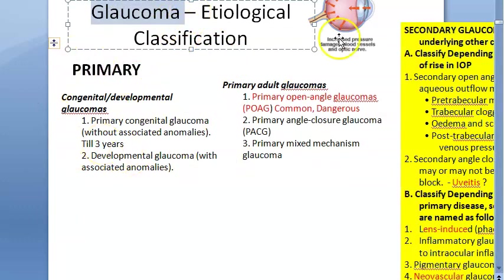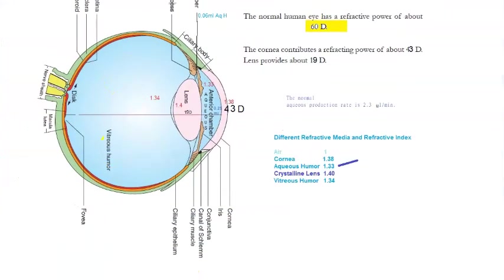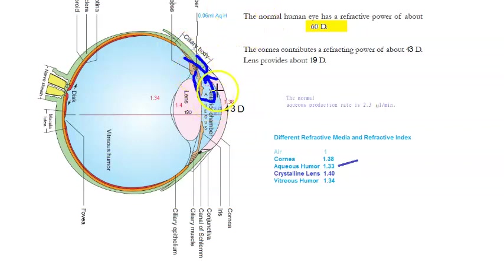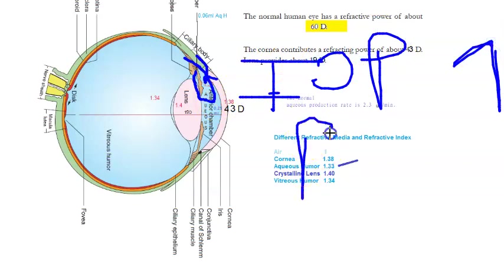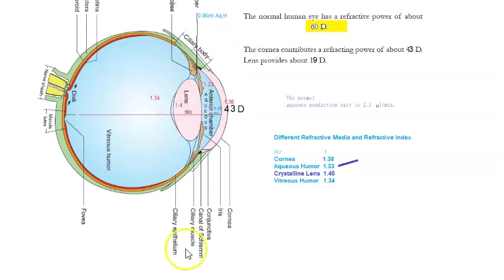Aqueous humor is produced in the posterior chamber by the ciliary processes. It comes out of the pupil and drains mainly through the trabecular meshwork or through the ciliary body. If for some reason production increases or drainage decreases, intraocular pressure will rise. Usually the drainage is reduced — the trabecular meshwork could have become clogged.